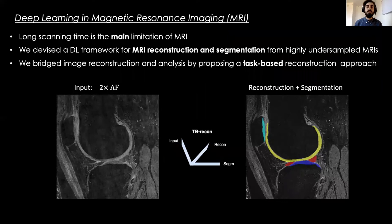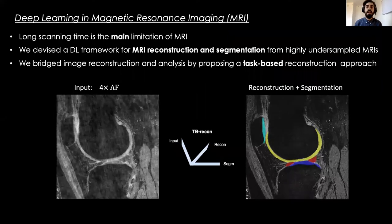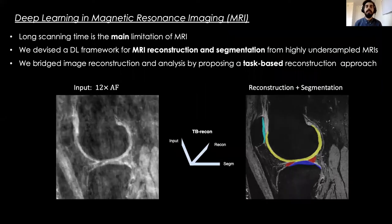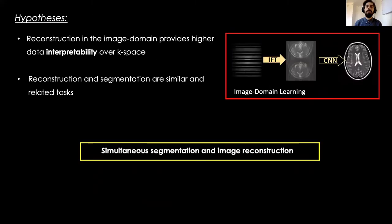We devise a deep learning framework for simultaneous MRI reconstruction and segmentation from highly undersampled MRIs. Our method exploits the power of deep multi-task learning to achieve reconstruction in the image domain learning space.